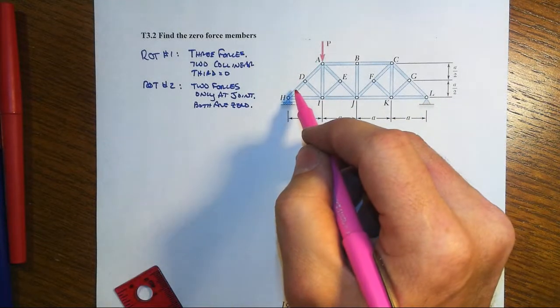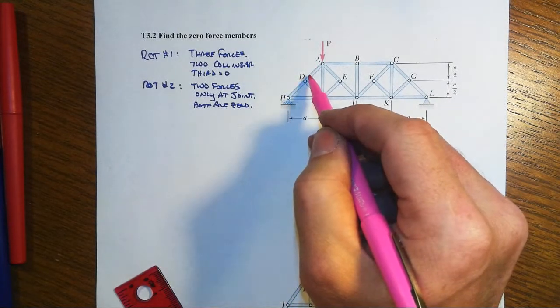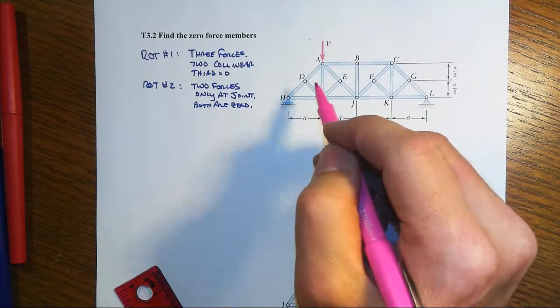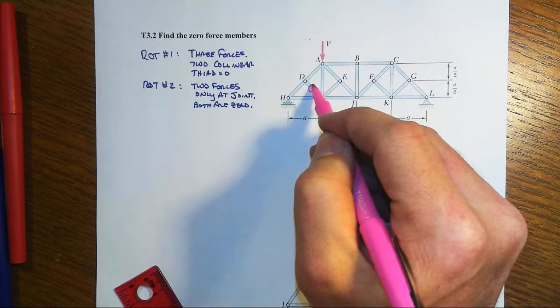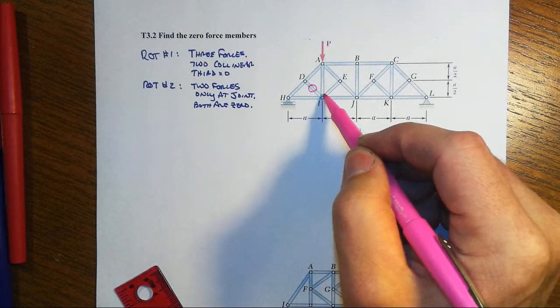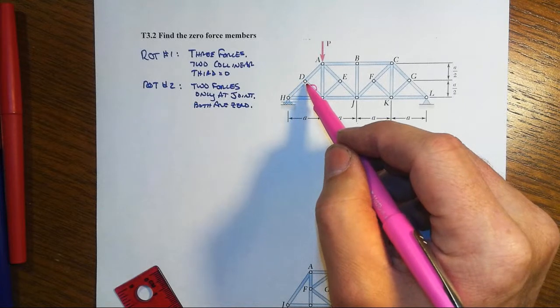If we go to the joint D, notice we have one, two, three, but two of them are collinear, that means that this third must be zero. So even though it comes down to here where we have lots of members coming in by joint D, DI must be zero.